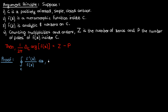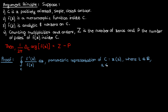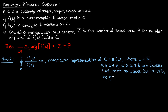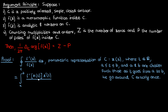We'll start the proof by looking at the integral over C of f prime of z over f of z. To perform this integral, we'll use a parametric representation of C with the parameter t, such that the curve C is represented by z of t, where t is a real parameter that runs from a to b. The limits a and b are selected such that as t goes from a to b, the complex number z encircles the closed contour C exactly once. Using this parametric representation, our integral in z becomes an integral in t from a to b.